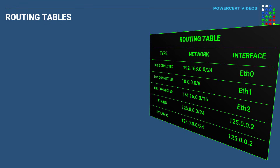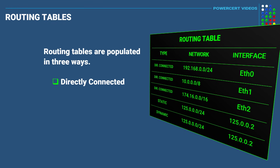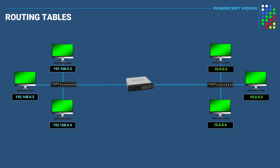Routing tables are populated in three ways, which are directly connected, static, and dynamic. So let's first talk about directly connected routing tables.